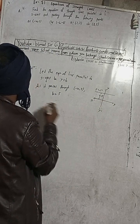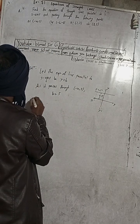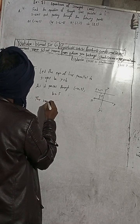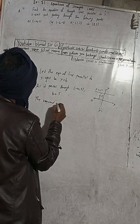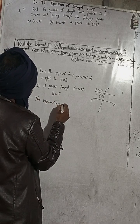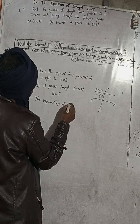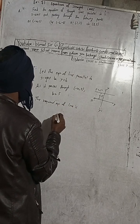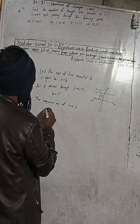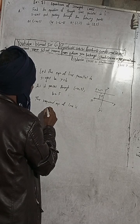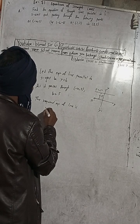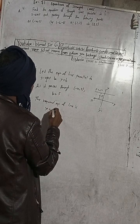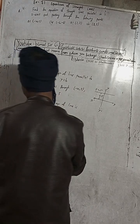Therefore, the required equation of the line is y = b, and since b = 5, the equation is y = 5.